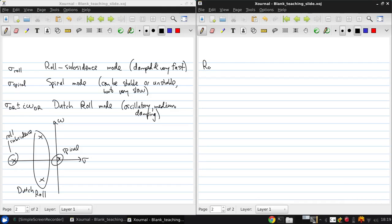Let's begin with the roll subsidence approximation. Here we assume pure roll motion about the x-body axis. So our plane starts out level and sometime later it will have rolled one way.